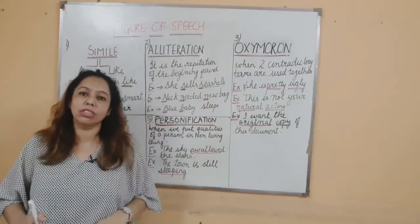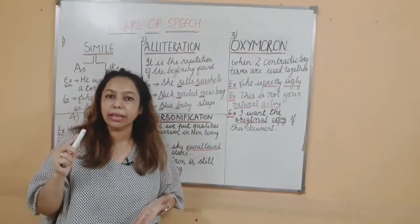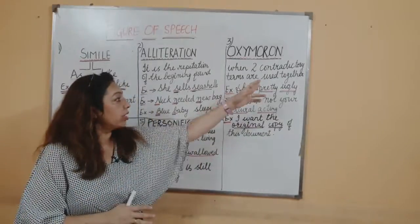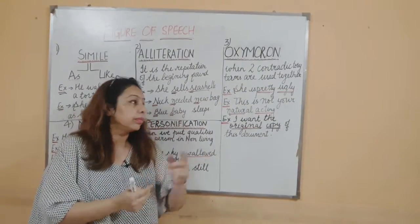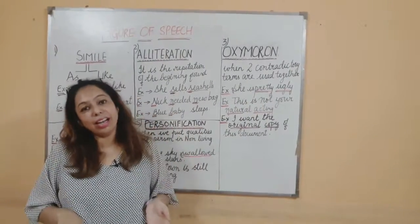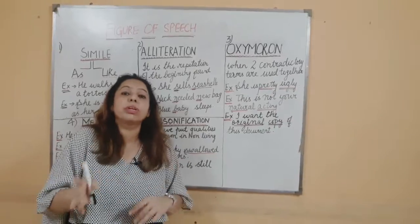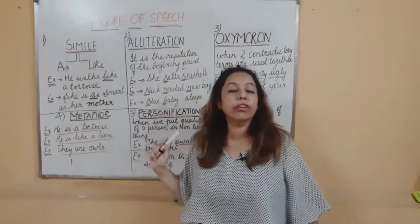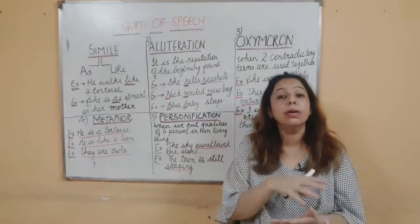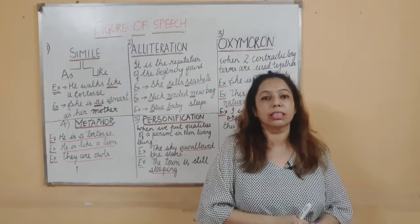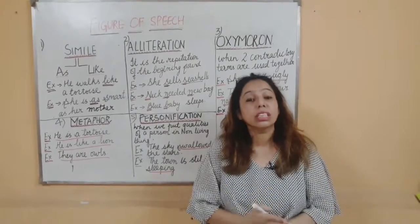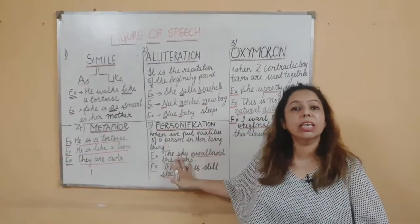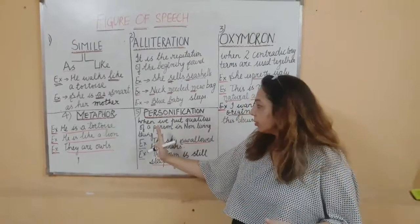So alliteration is when the first alphabet and the sound are the same. The next figure of speech is oxymoron — two contradictory terms in one sentence. 'She is pretty ugly' — pretty and ugly are opposites in one sentence, so it is oxymoron. Next, personification — when living qualities are given to non-living things. For example: 'The town is still sleeping.' Town is non-living, but sleeping is a quality of living things. So when a non-living thing inherits living qualities, it is personification.